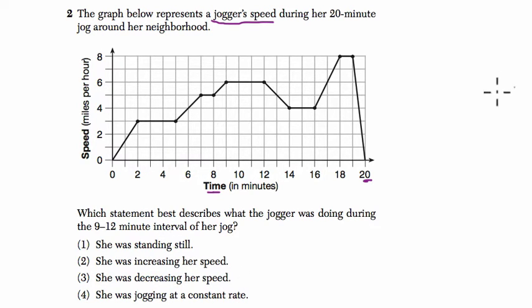We've got 9 minutes here and 12 there. If we look up, we can see that in this interval right here, the line, the height of the line is not changing. So what is not changing? The speed. Her speed is remaining constant.